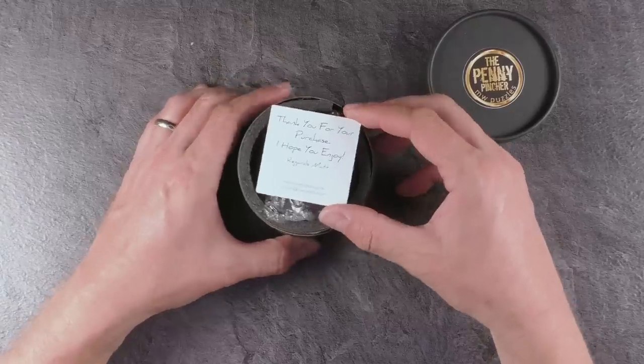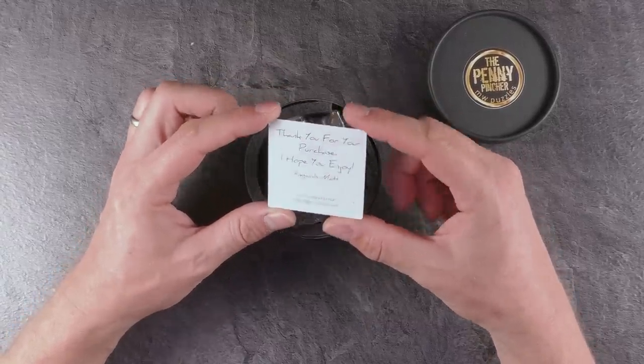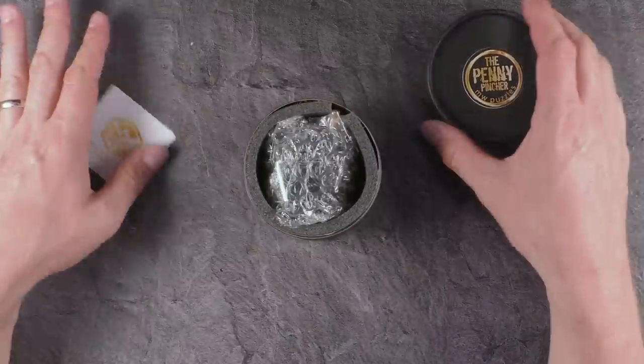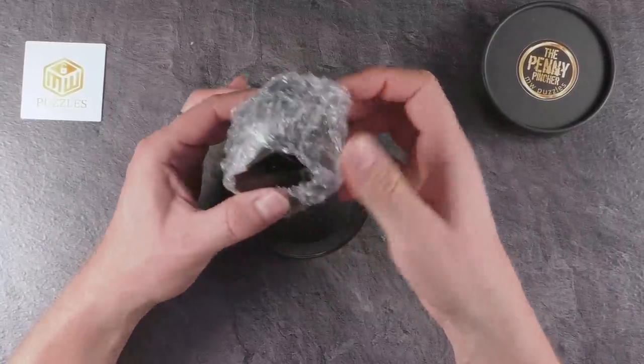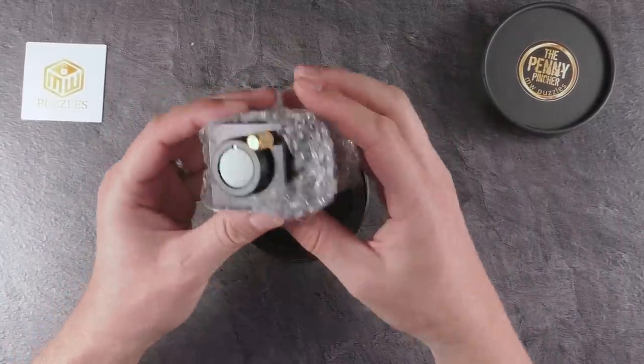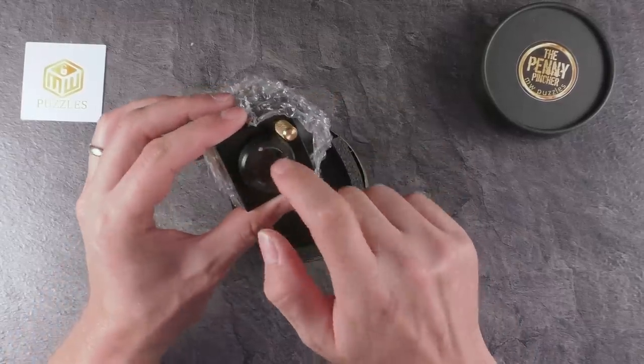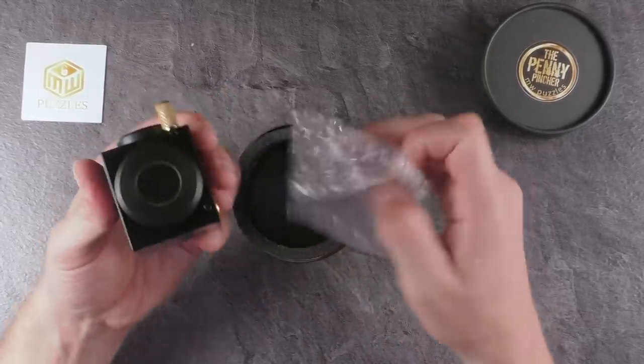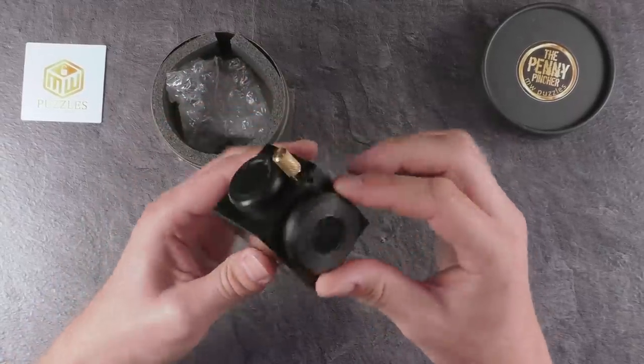Thank you for your purchase. I hope you enjoy. Regards, Matt. MWPuzzles.com. MWPuzzles logo and MWPuzzles second puzzle, the Penny Puncher. Also anodized in black with some brass components. And I also see some acrylic here in addition. Wow. Oh, wow. This looks very unique.